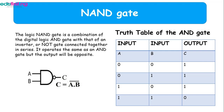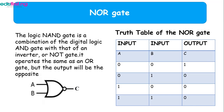The NAND gate operates the same as an AND gate but the output will be the opposite. For an AND gate, the output is one when both inputs are on. But for the NAND gate it's the opposite — if any of the inputs is on, we have a one as an output. So it's just the inverse of the AND gate output.